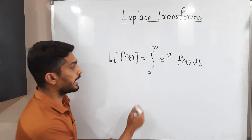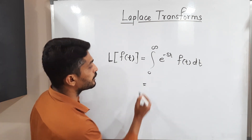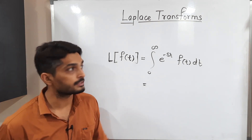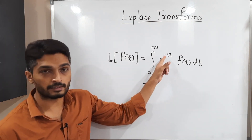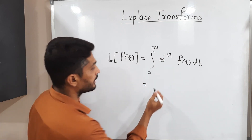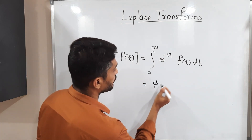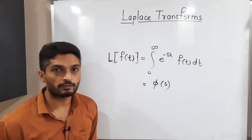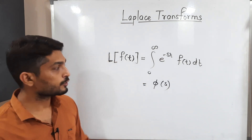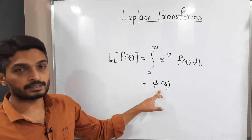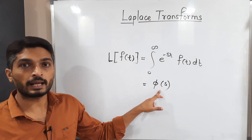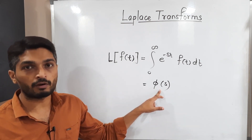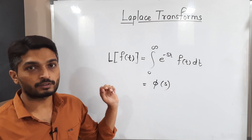Finally, we will have one function of s — since we have the variable s — and we denote it as phi of s. So phi of s is the Laplace transform of f(t).